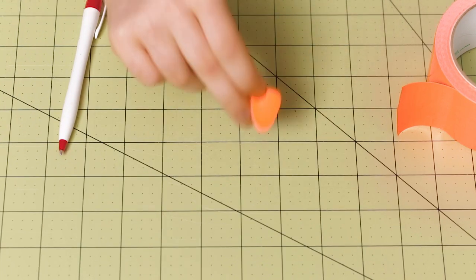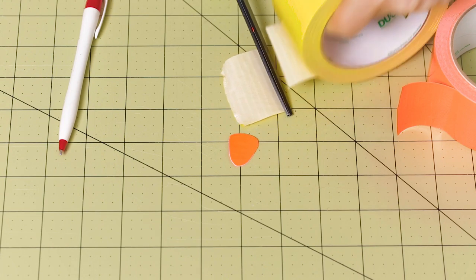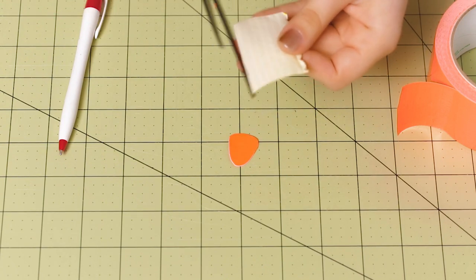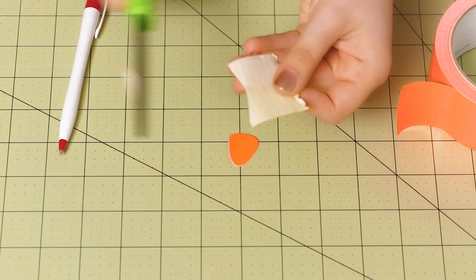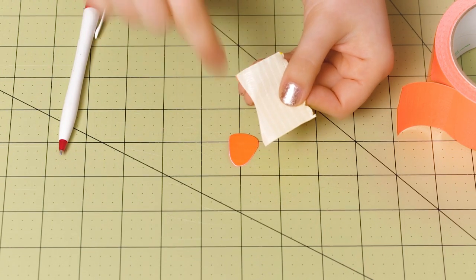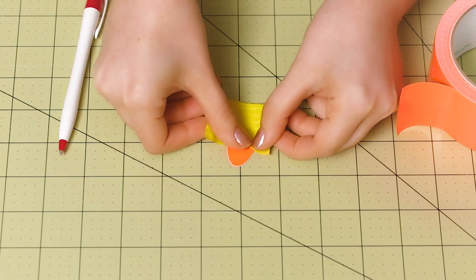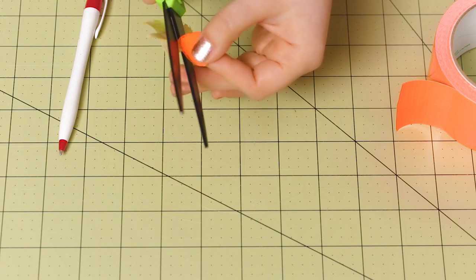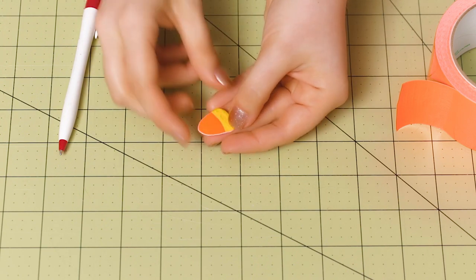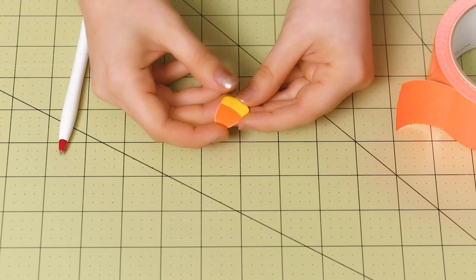So once you have your shape cut out, you can grab your yellow tape and cut off a small piece of tape. And now we're just going to cut a very slight arc into it. This doesn't have to be perfect. You just want it to be slightly curved. Carefully lay that down on your candy corn shape and then trim off all of the excess.